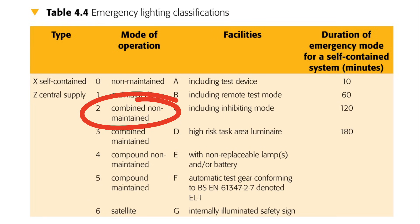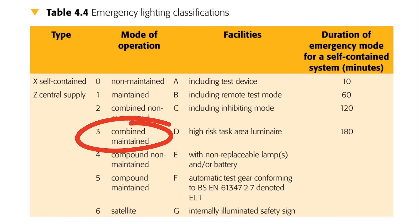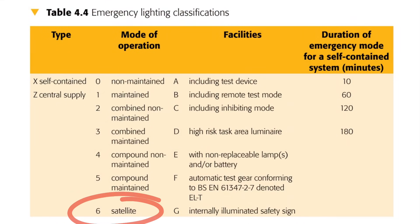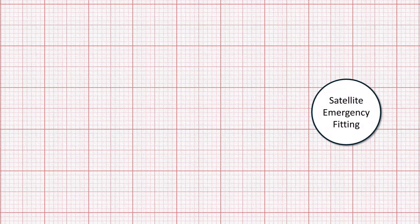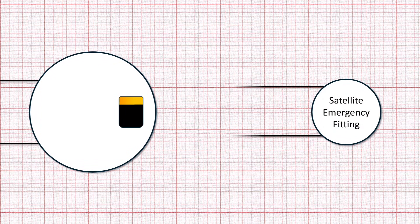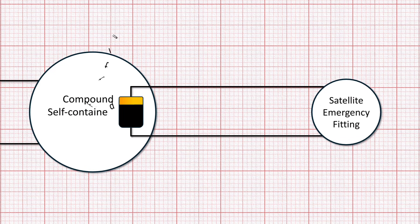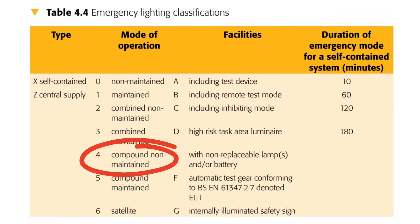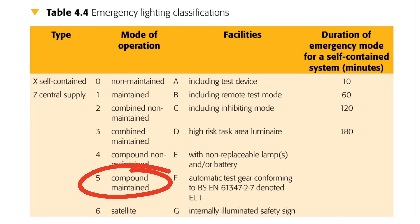Mode of operation two is combined and non-maintained. Mode of operation three is combined and maintained. Skipping ahead to number six, this is what's referred to as satellite — where an emergency light fitting doesn't have a battery backup inside itself, but rather derives its emergency supply from another fitting. The fitting it gets its supply from is referred to in modes four and five as compound self-contained emergency fittings. Number four is compound non-maintained, and number five is compound maintained.